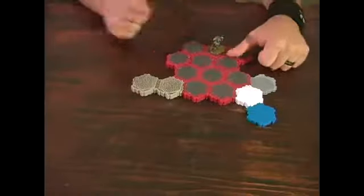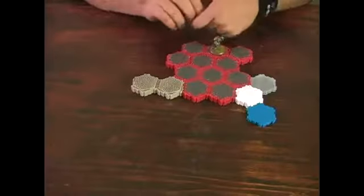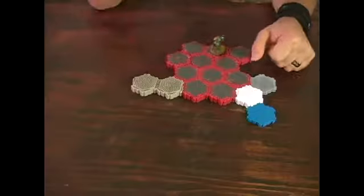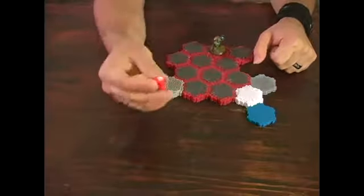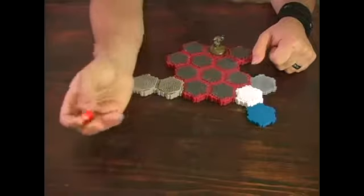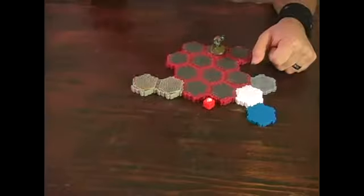Now that he has ended his moves on a lava field, he is going to roll for lava field damage. To roll for lava field damage, you take one attack die, which is a die with the skull on two sides and the blank on four, and you roll. And there is a skull.